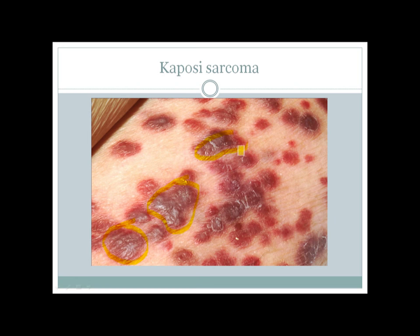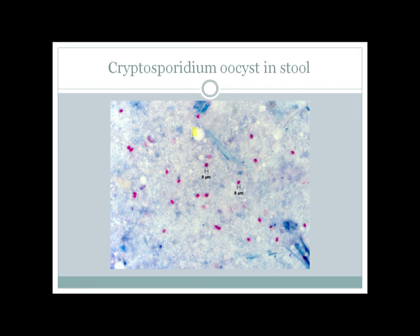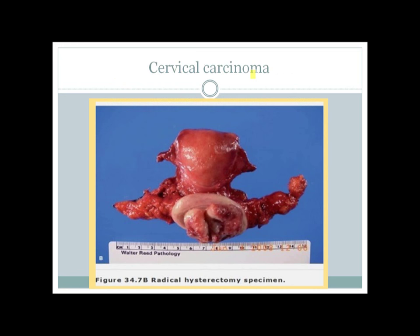Here you can see a stool sample stained with modified acid-fast stain showing acid-fast positive cysts — those are Cryptosporidium cysts in stool. Here you can see a surgical specimen of radical hysterectomy showing the cervix with a growth over it, which can occur due to human papillomavirus infection, especially types 16, 18, 31, and 33.